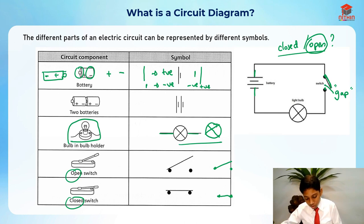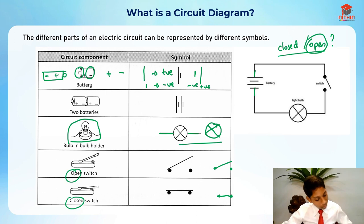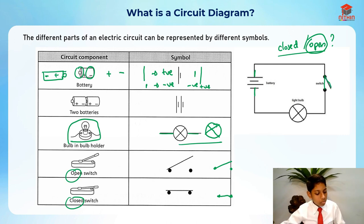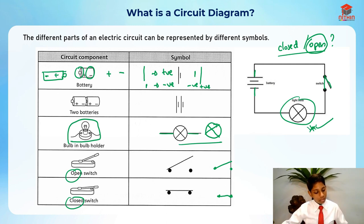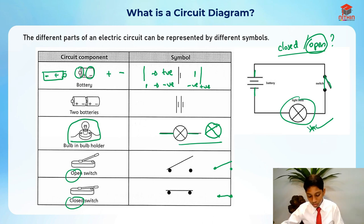If this switch were to be closed, it would be a closed circuit. When there's an open circuit, the light bulb won't light up. When there's a closed circuit, it will light up. So the light bulb determines whether the circuit is open or closed — if it lights up it's a closed circuit, and if it doesn't light up it's an open circuit.